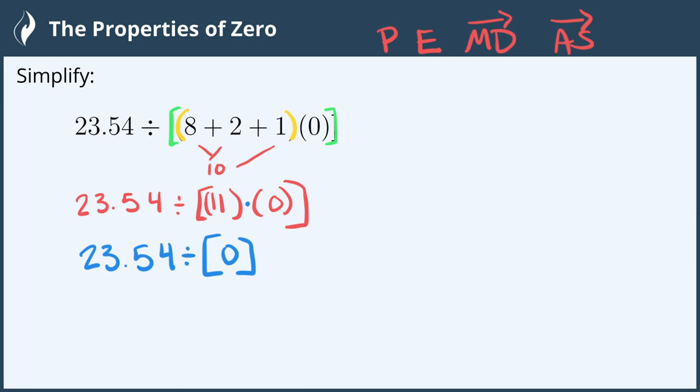So we have 23.54 divided by 0. Since we cannot divide by 0, this is undefined, or the empty set, shown as a circle with a slanted line through it.